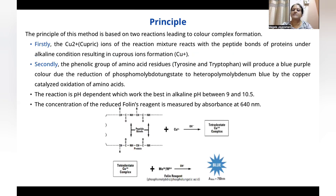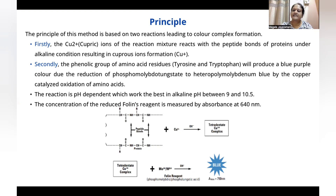The principle behind this method involves two reactions leading to color complex formation. Firstly, the cupric ions of the reaction mixture react with the peptide bond in alkaline conditions, resulting in cuprous ion formation. Secondly, the phenolic group of amino acid residues such as tyrosine and tryptophan produces a blue color complex, due to the reduction of phosphomolybdo tungstate to heterophosphomolybdenum blue by the copper-catalyzed oxidation of amino acids. The reaction is carried out at alkaline pH between 9 and 10.5, and the concentration of the reduced Folin-phenol reagent is measured by absorbance at 640 nanometers to a maximum absorbance of 750 nanometers.